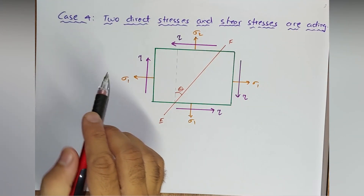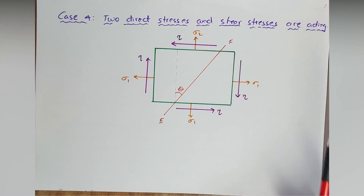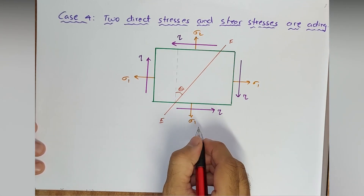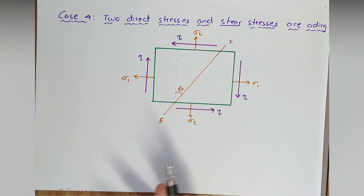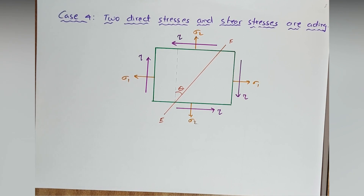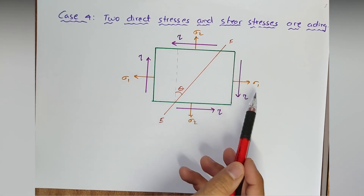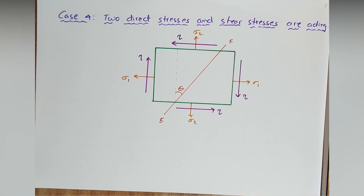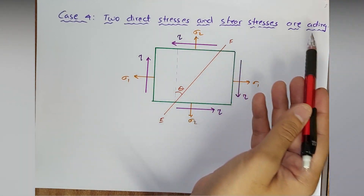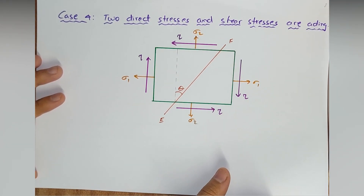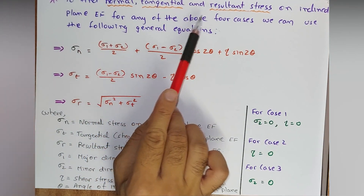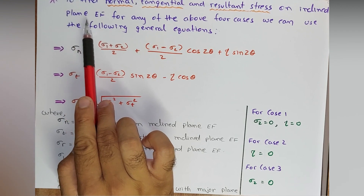Case 4: two direct stresses and shear stresses are all acting together. Here sigma 1 and sigma 2 are the normal (direct/principal) stresses, and equal and opposite shear stresses act on both planes. So overall four different stresses — sigma 1, sigma 2, and two shear stresses — are acting, and we analyze the normal, tangential, and resultant stresses on plane EF at angle theta.